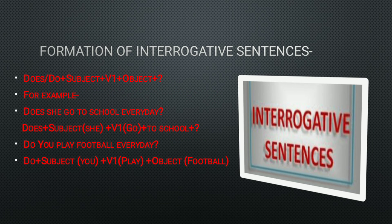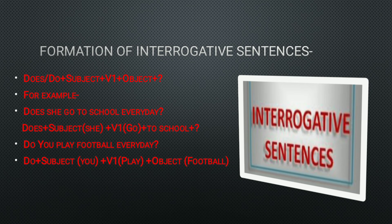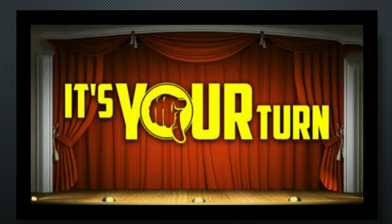Now let's understand how to construct interrogative sentences in simple present tense. We carry 'does' or 'do' to the beginning. The formula is: Does/Do + Subject + V1 + Object + question mark. Without a question mark, an interrogative sentence is not an interrogative sentence. For example, 'Does she go to school every day?' — does + subject 'she' + V1 'go' + object. For plural: 'Do you play football every day?' — do + subject 'you' + V1 'play' + object 'football.'